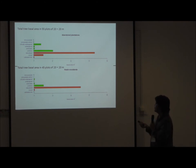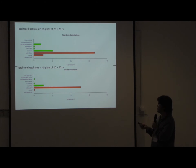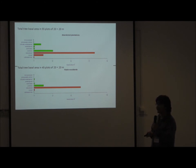Based on work by two students who carried out plot studies — 55 plots on abandoned land and 45 plots on wastelands — you can see that the total basal area shows a higher percentage of exotic species. This confirms that the majority of land cover in these areas is made up of exotic species.